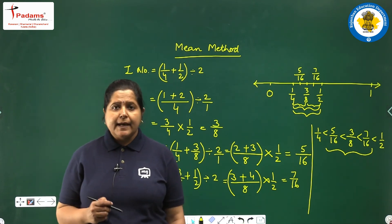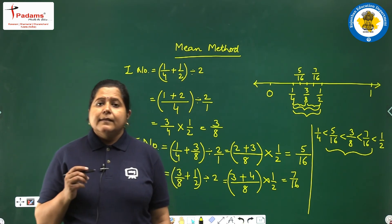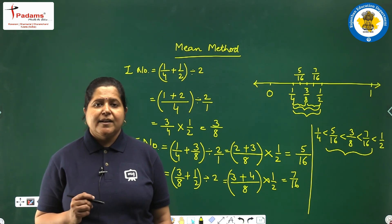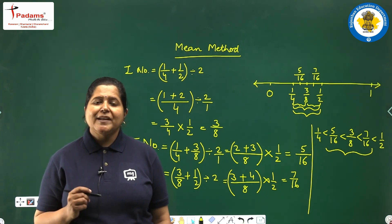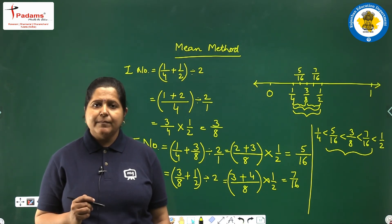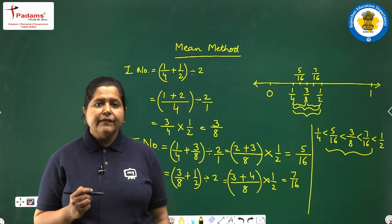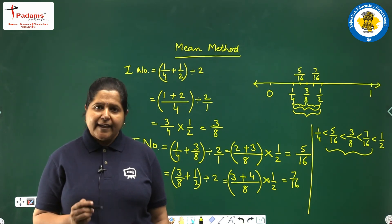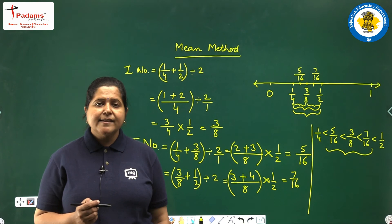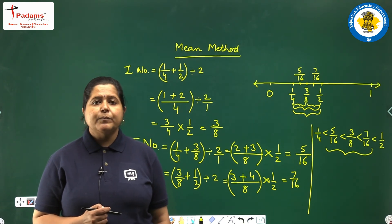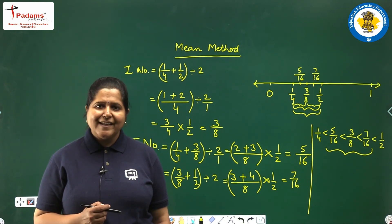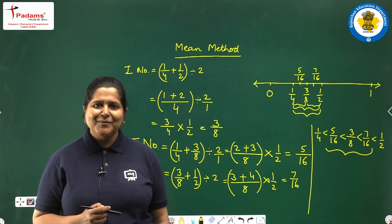Today we discussed the existence of infinitely many rational numbers between any two given rational numbers, and we discussed a few examples from the book. In our next class, we will be doing exercise 1.2 and completing this chapter. Till then, keep practicing, keep watching — thank you.